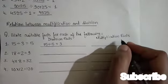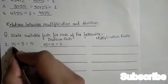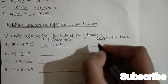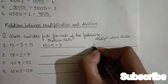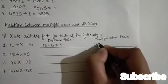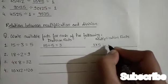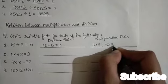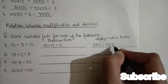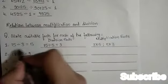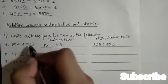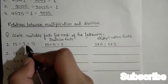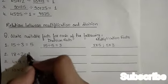The multiplication facts for 15 divided by 3 equals 5 are: 3 into 5 equals 15, and 5 into 3 equals 15. Ye ek division fact hai, toh ek division fact ke do multiplication fact hote hai.